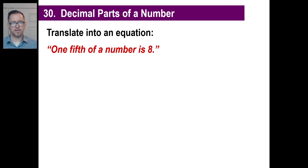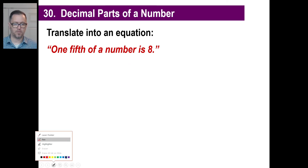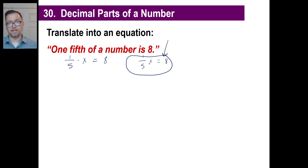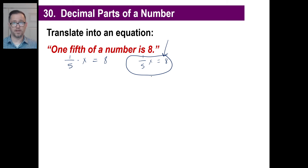Now let's translate phrases into equations. We go left to right, just like reading. One-fifth of a number is eight: one-fifth times X equals 8, or (1/5)X = 8. If you saw this in your problem set and needed to solve for X, you'd multiply both sides by the reciprocal — five over one — and the answer is 40. All you're doing is one extra step: taking the English sentence and turning it into an algebraic equation.